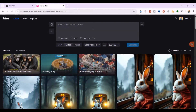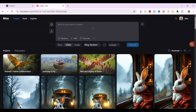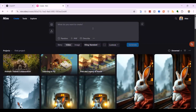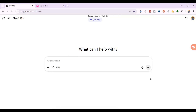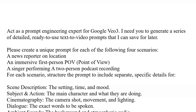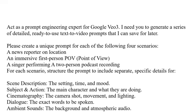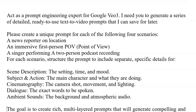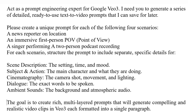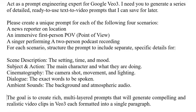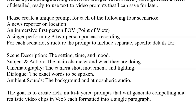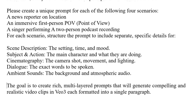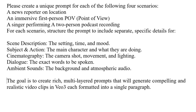So now we need a prompt, but we don't want a basic prompt — we need a professional cinematic prompt. To get that, we're going to command ChatGPT to be our personal prompt engineering expert. Open ChatGPT and give it this exact command: Act as a prompt engineering expert for Google VO3. I need you to generate a series of detailed, ready-to-use text-to-video prompts. Create a unique prompt for each of the following four scenarios: a news reporter on location, an immersive first-person POV, a singer performing, and a two-person podcast recording.